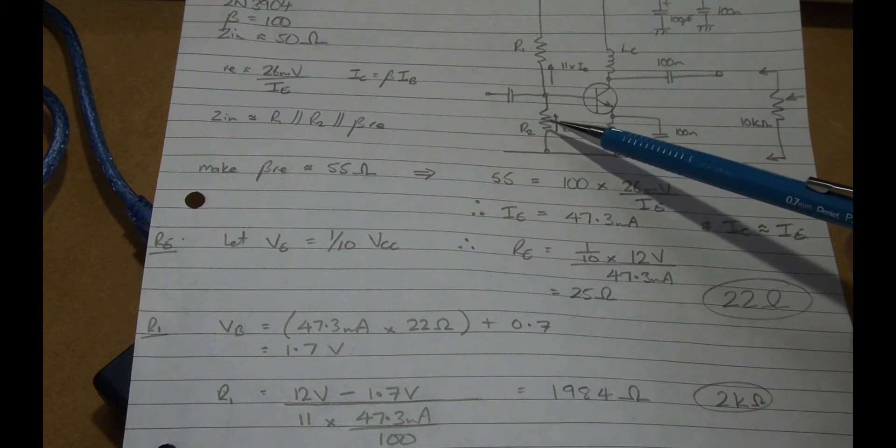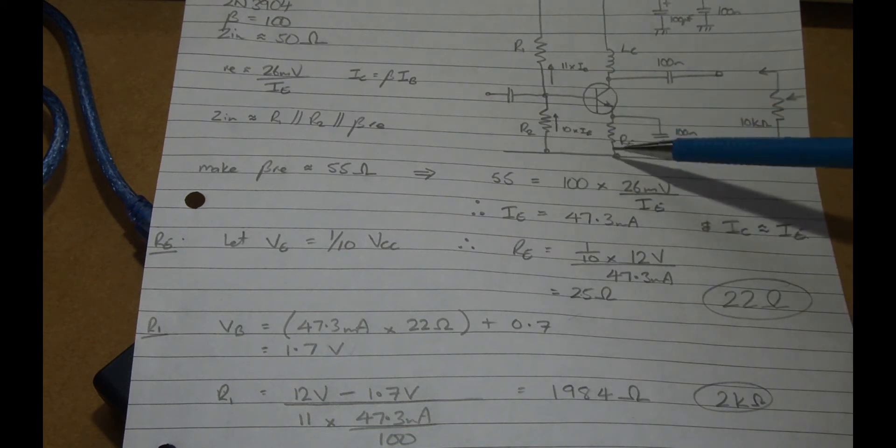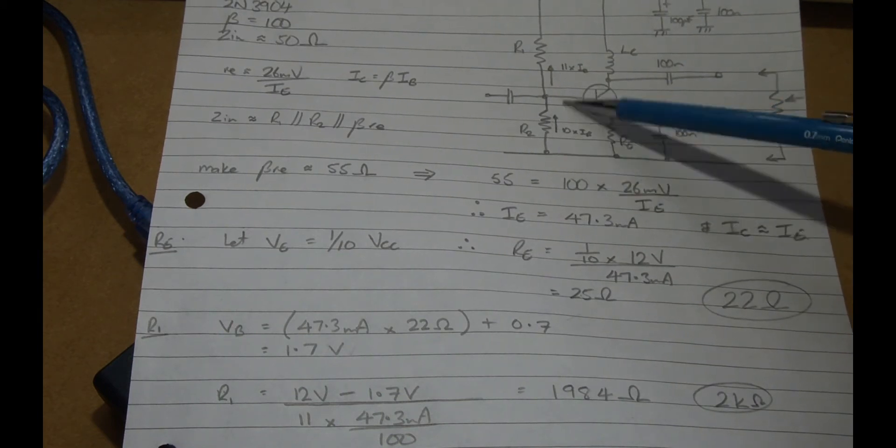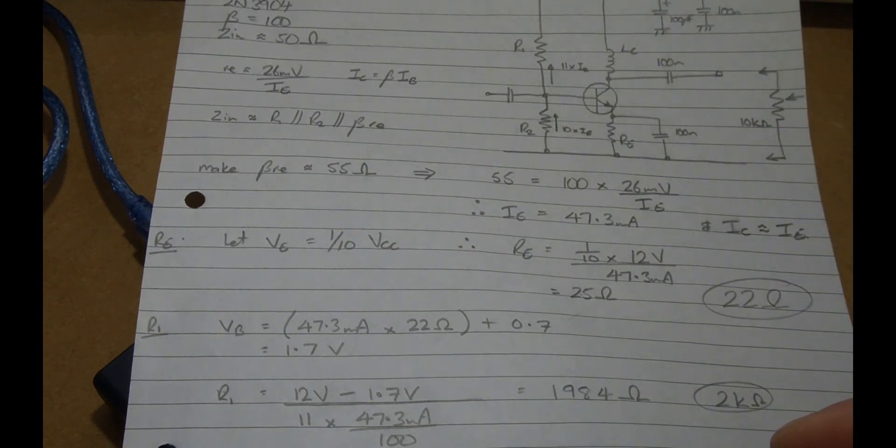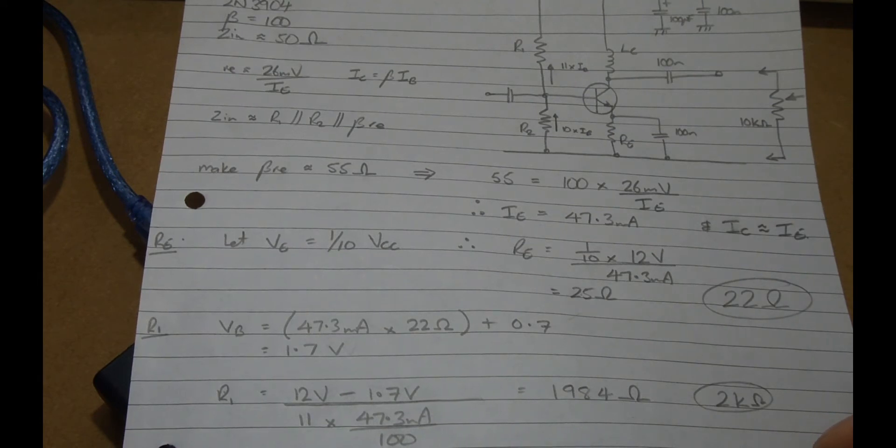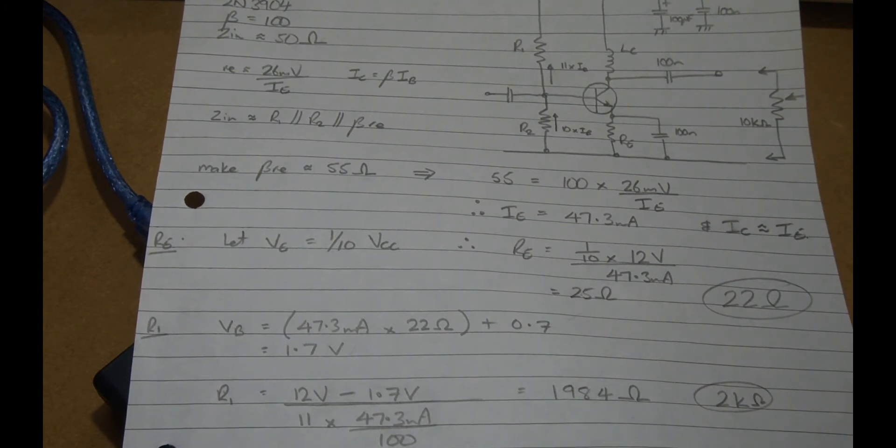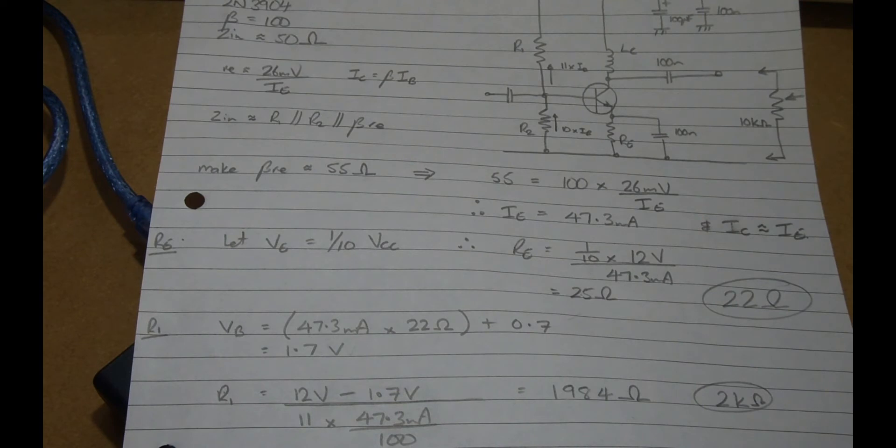For R2 similar process. So it'll be the voltage here divided by its current will give us the resistance. So that 1.7 volts at the base. In this case it's going to be 10 times IB. So again IC divided by beta equals IB times 10. Do the division. Comes out 359. So we'll use roughly 390 ohms.